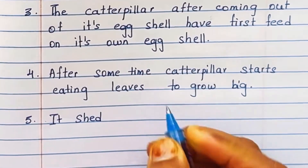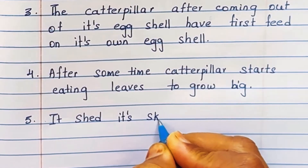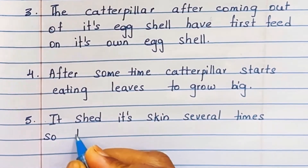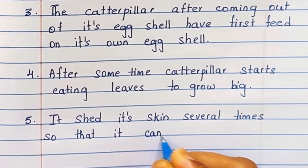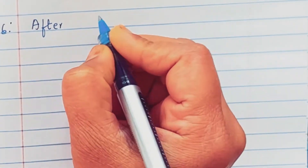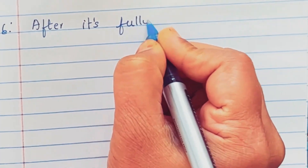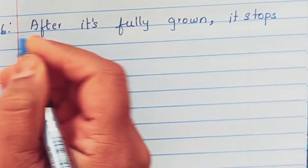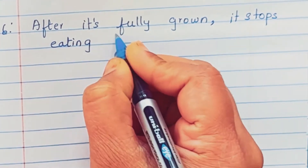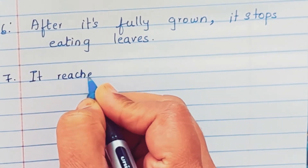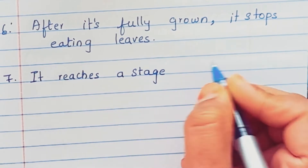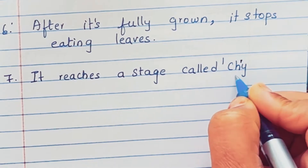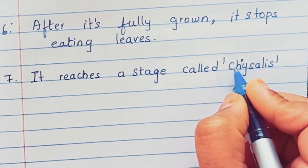Fifth point: it sheds its skin several times so that it can grow. Sixth point: after it is fully grown, it stops eating leaves. It reaches a stage called chrysalis.